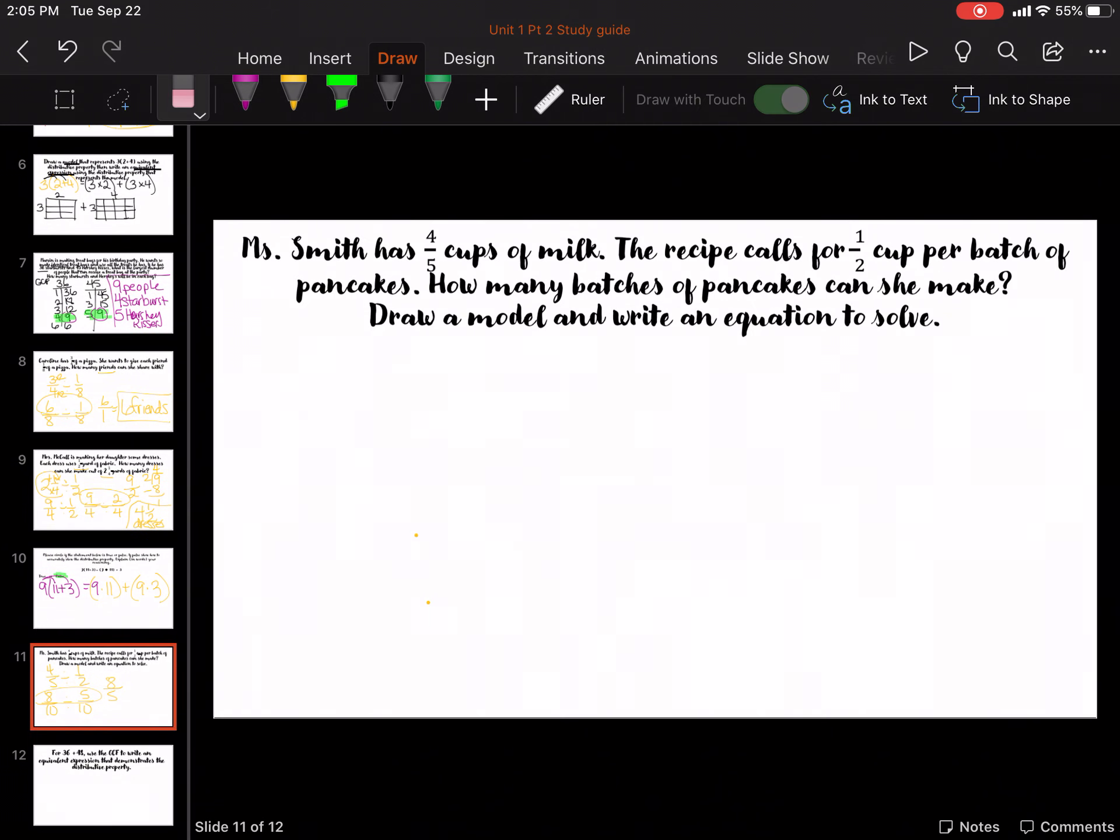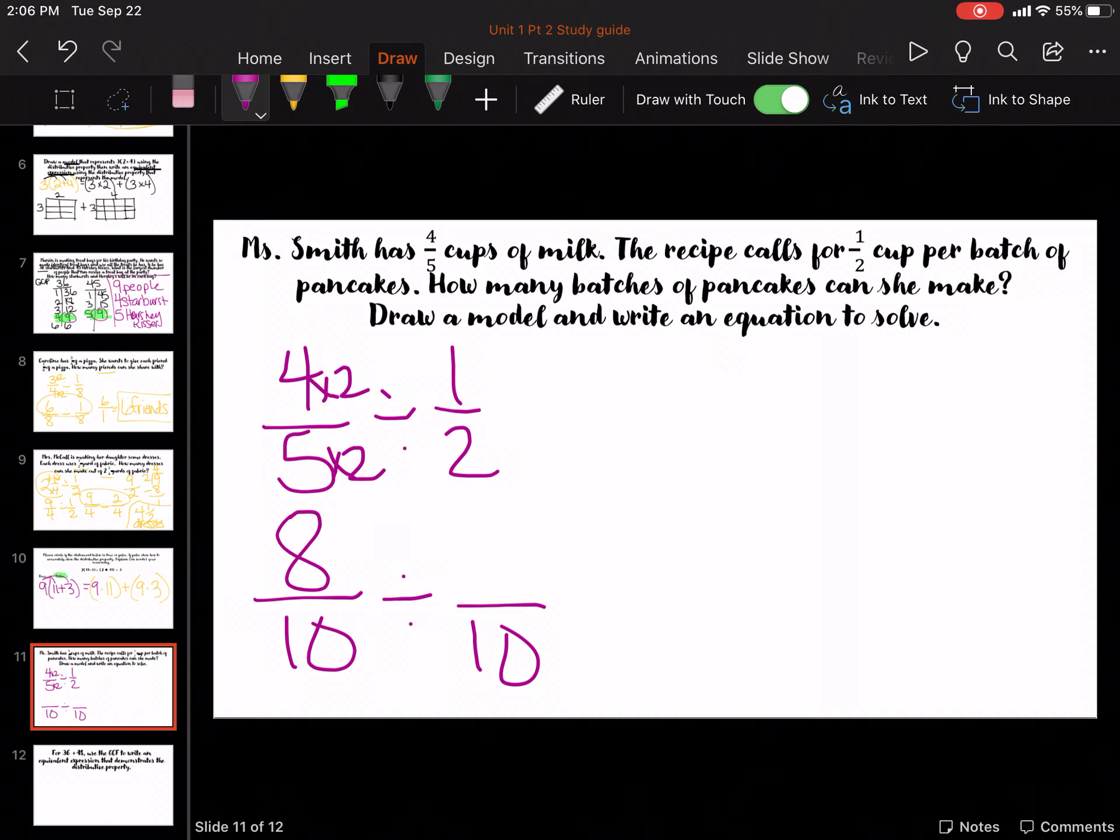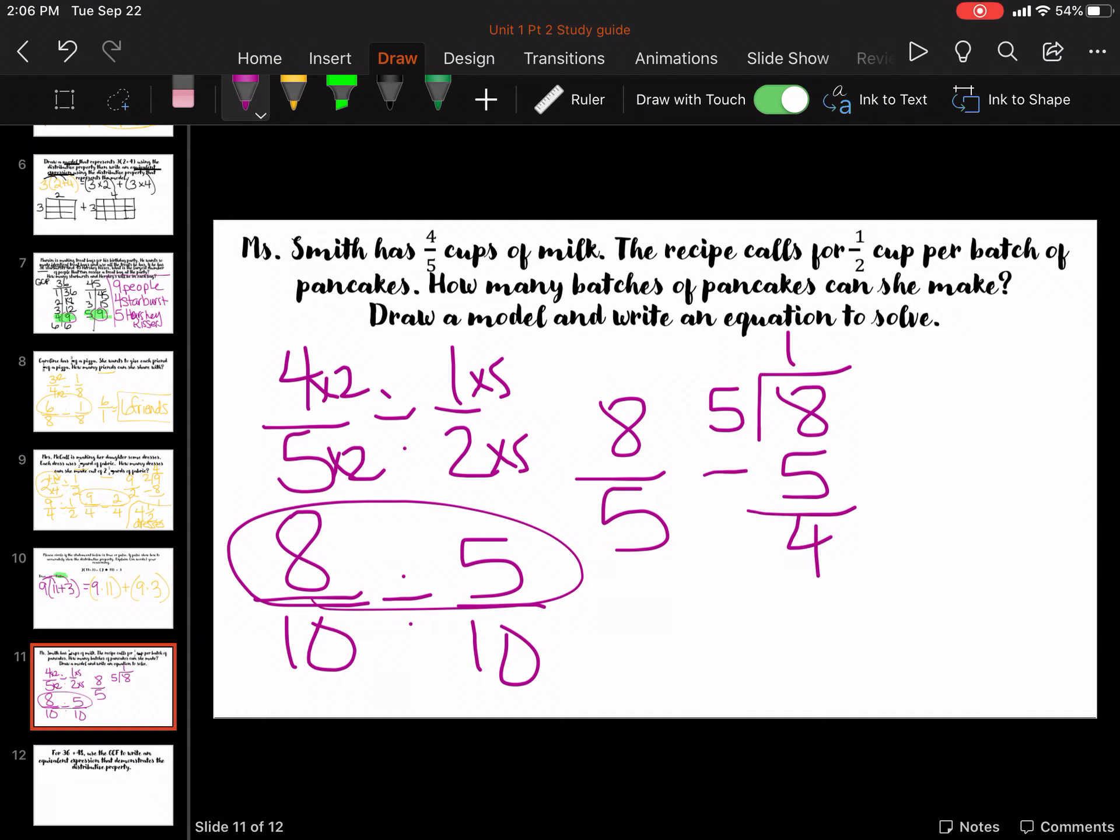So, this next one, 4 fifths cups of milk. The recipe calls for 1 half cup per batch. How many batches can she make? So, it's 4 fifths divided by 1 half. Common denominator of 10. So, times 2, times 2, that's 8, times 5, times 5. So, it's 8 over 5. 8 in the house, goes in one time. 3 left over. So, it is 1 and 3 fifths batches.